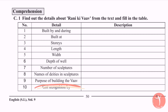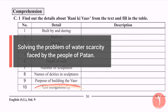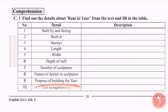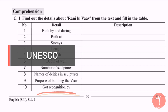Number 9, the purpose of building the Vav was to solve the problem of water scarcity faced by the people of Patan. The last point is recognition — it was recognized by UNESCO, the international organization.